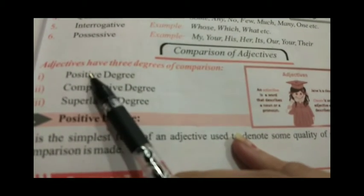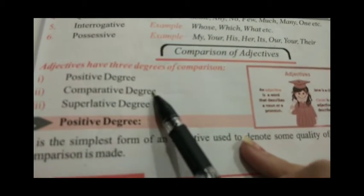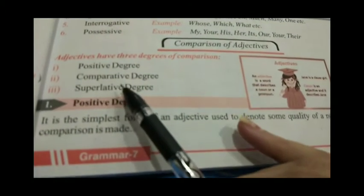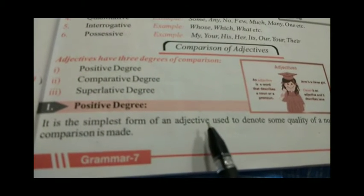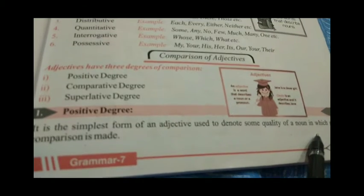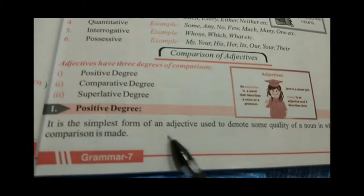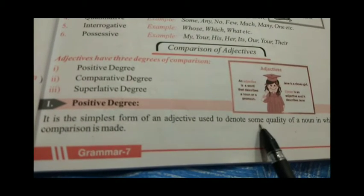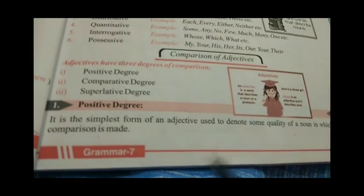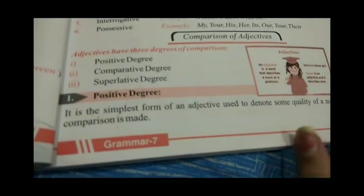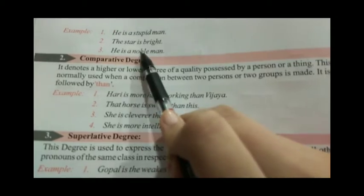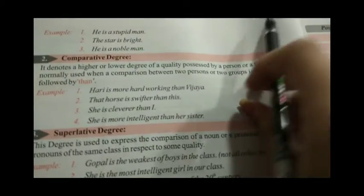Now we are going to study comparison of adjectives. There are three degrees of comparison. The first is positive degree, the second is comparative degree, and the third is superlative degree. Positive degree की बात करें — it is the simplest form of an adjective used to denote some quality of a noun in which no comparison is made. It is a simple adjective that describes a quality of a noun but is not compared with anything. Examples from page 22: 'He is a stupid man,' 'The star is bright,' 'He is a nobleman.'